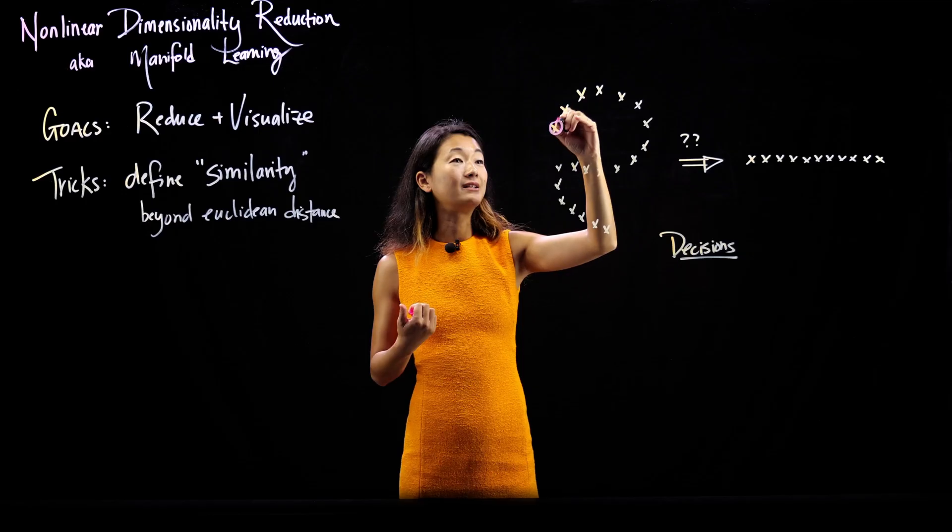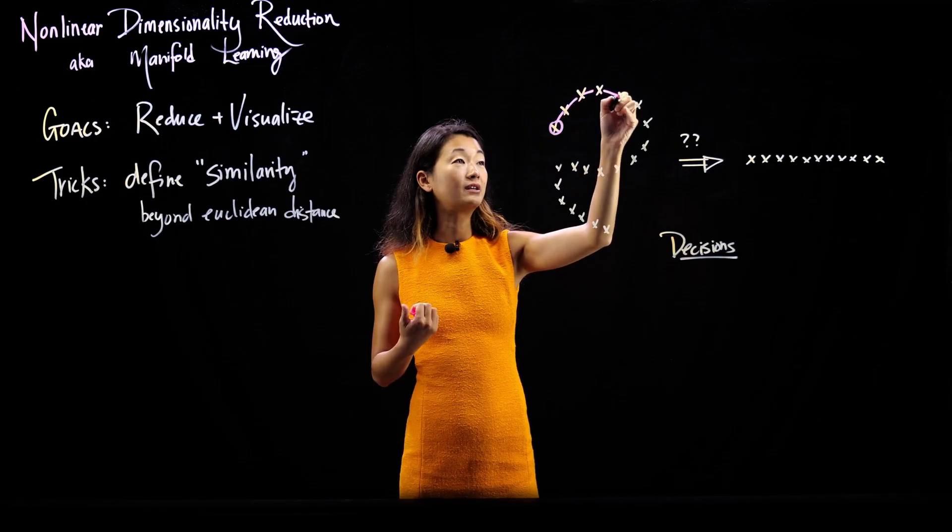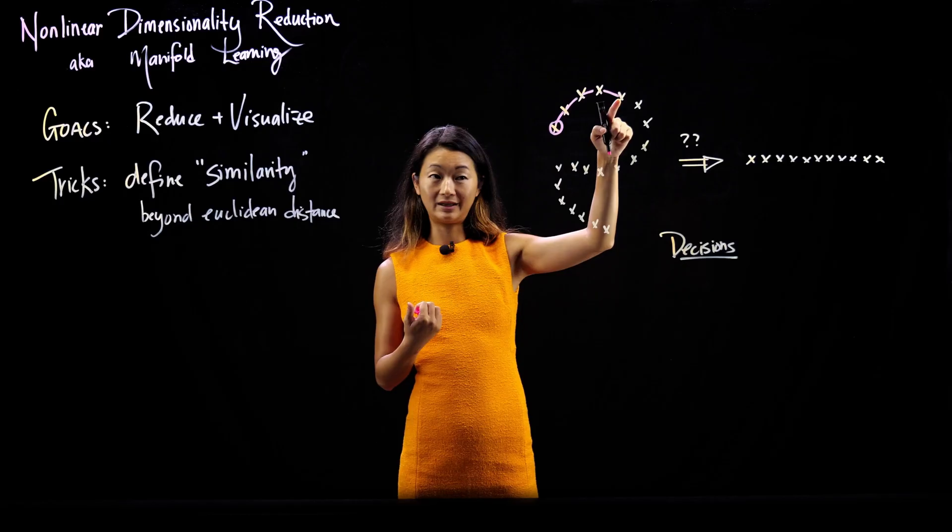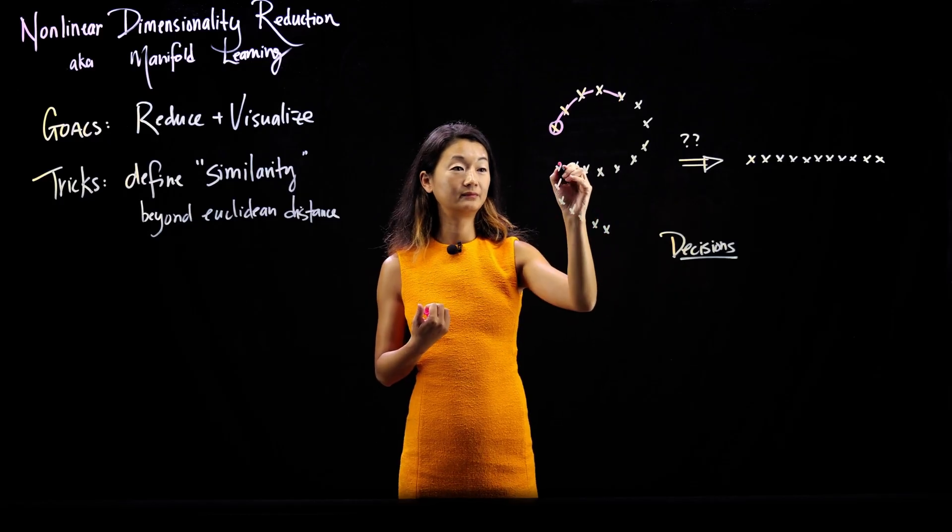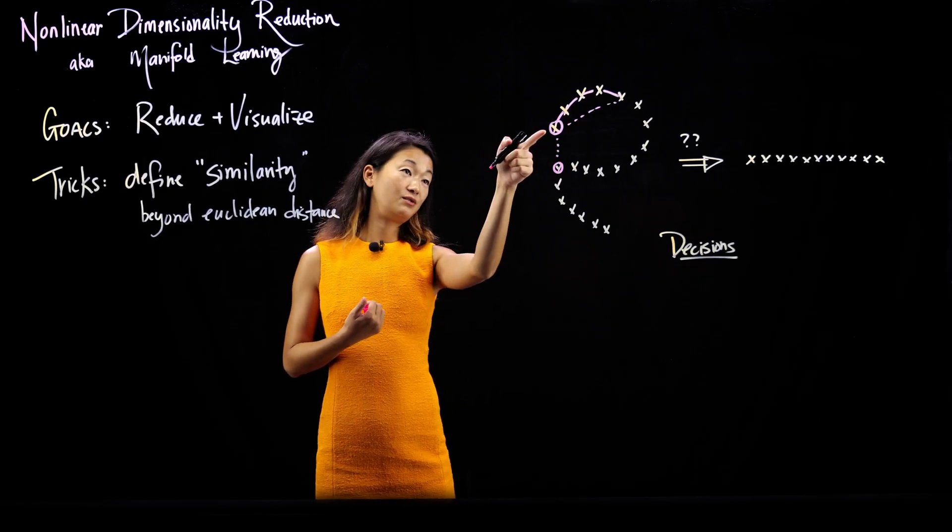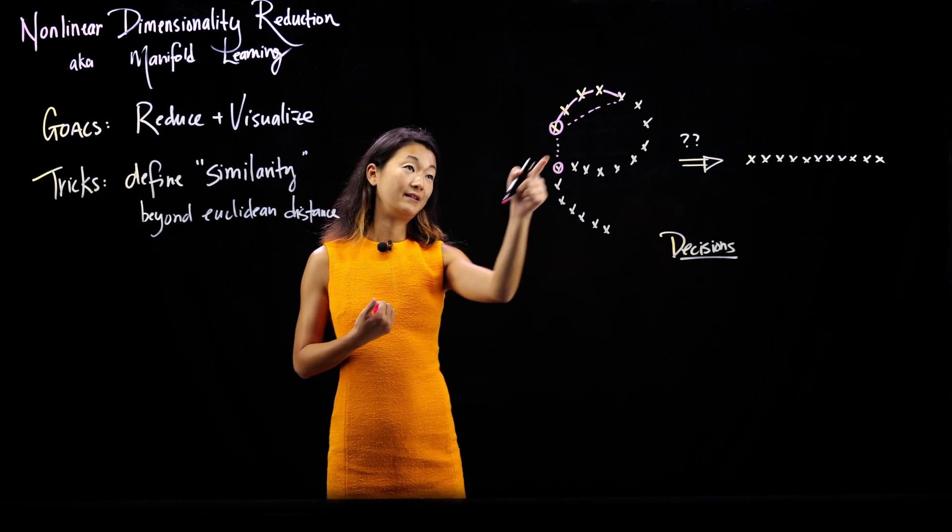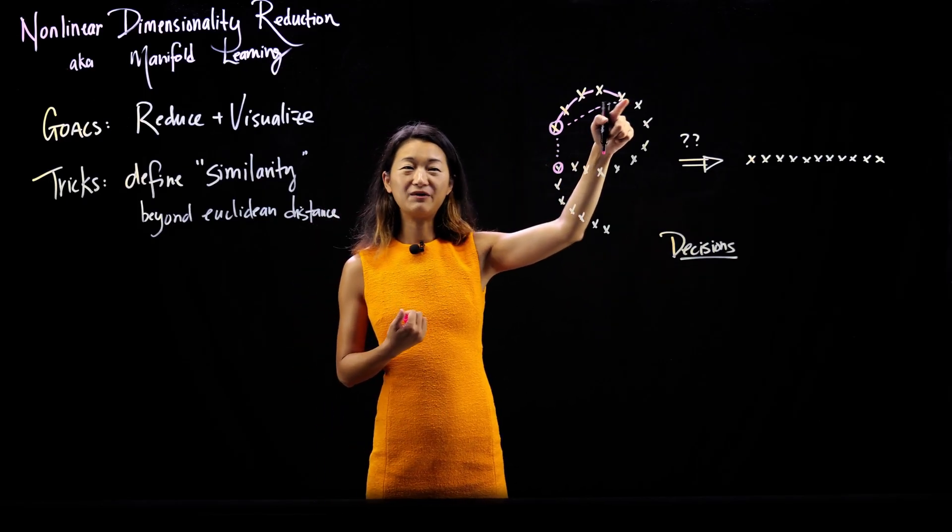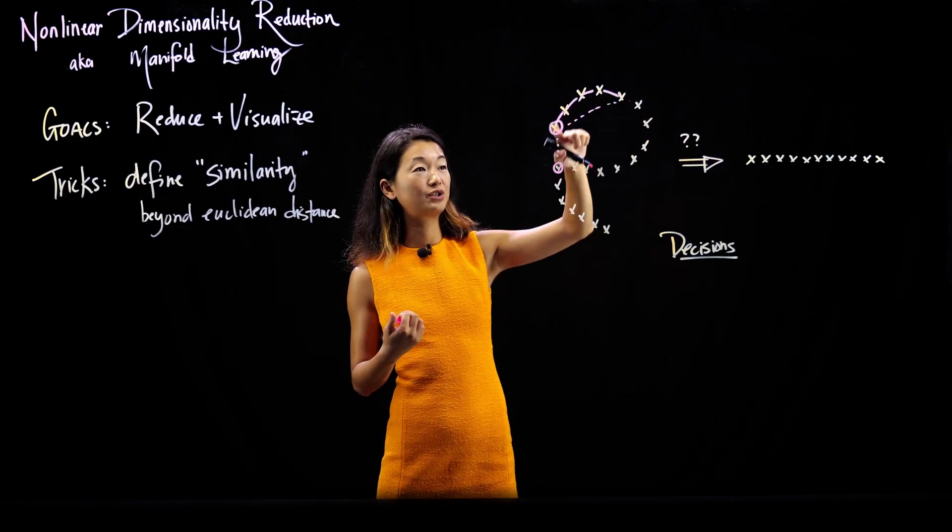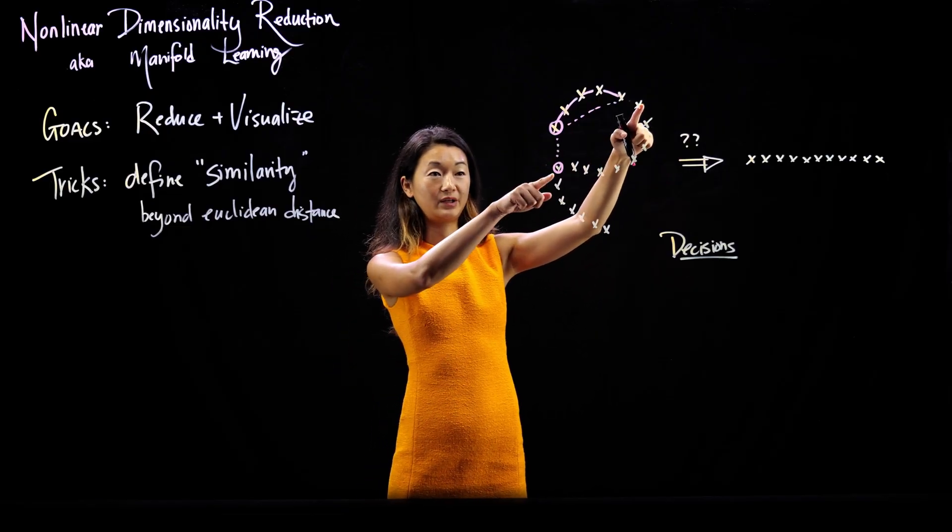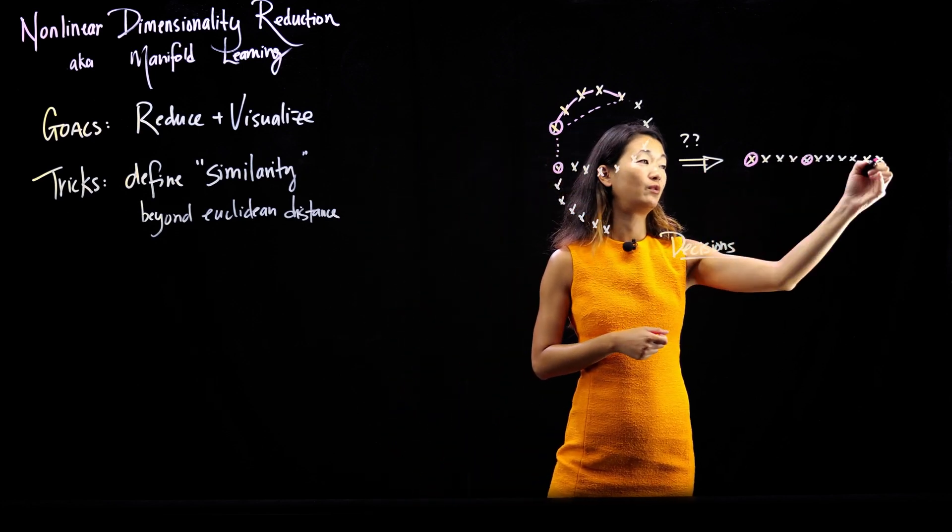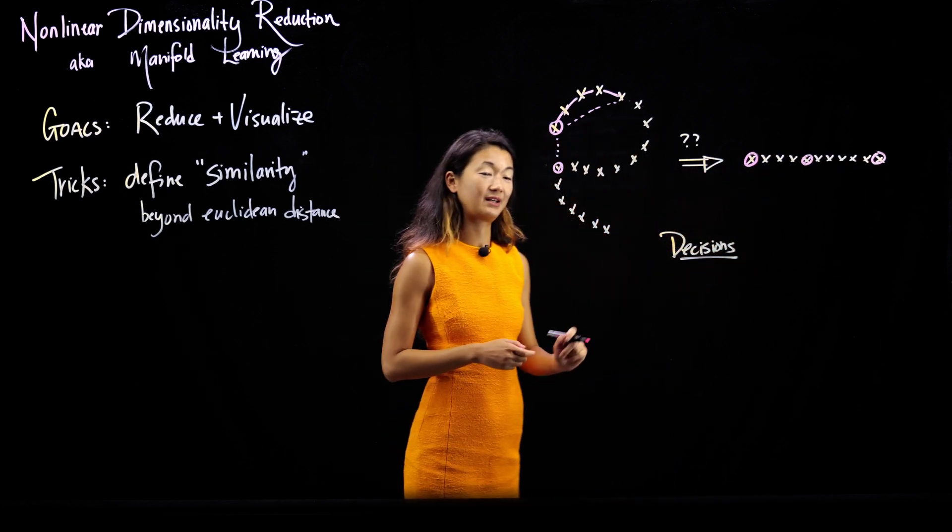But it's then connected in this way over here so that it's actually more connected to this data point than it is to this one. Even though these two Euclidean distance, it's Euclidean closer to this point than it is to this point here. But if you just look at the S-curve, I think the right answer we're kind of looking for is that it should be closer to this point than it is to this point. When we flatten it out, they're going to end up being these points respectively or something like that.